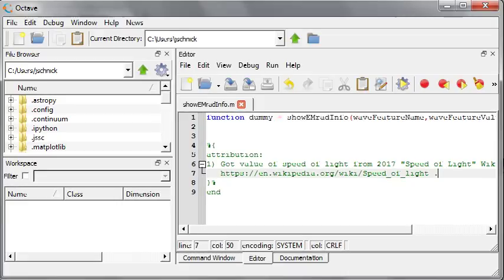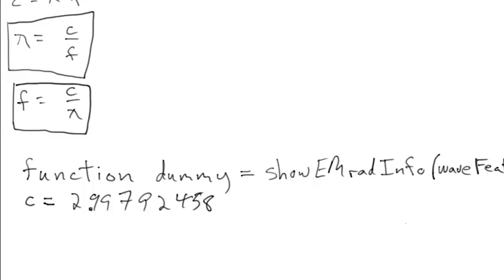I'll leave it the way they had it and group the digits better: 299 792 458. The modern international way of writing numbers is a space between sets of three digits, no comma, because in some countries they use a period as a decimal separator. This is meters per second, and I'll initialize that value.